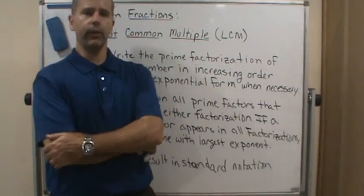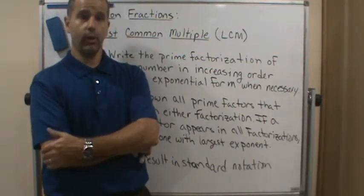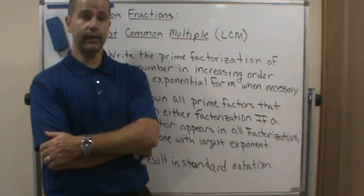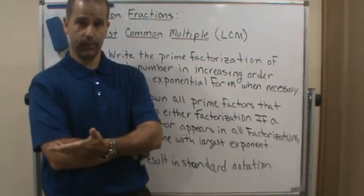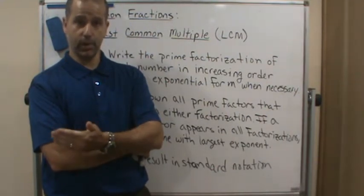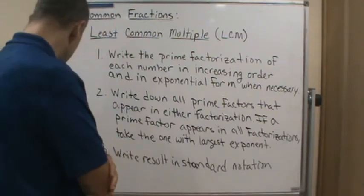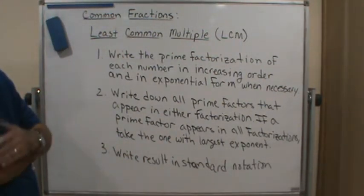Welcome back. Now we're going to go through the three steps of finding the least common multiple of given numbers by using the prime factorization of each number. I'm going to read through this and then we'll do examples so you can see it in action.